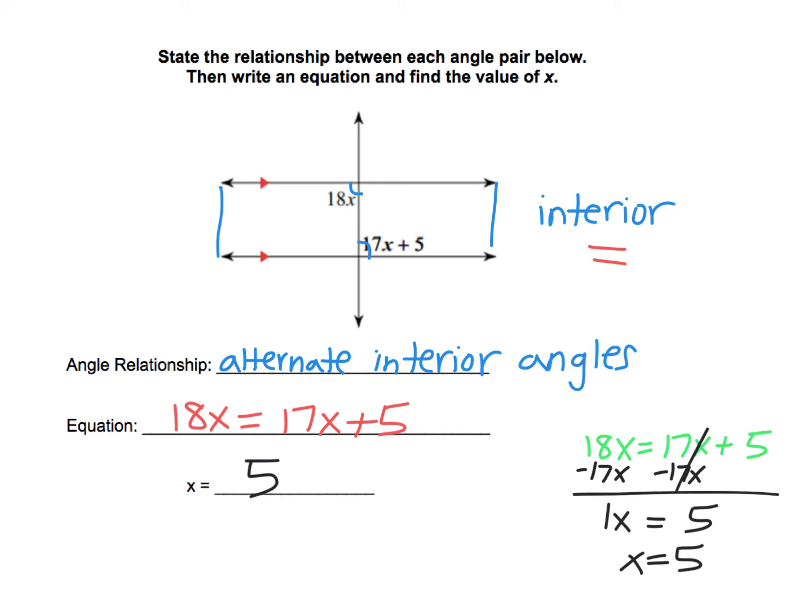You can verify that your answer is correct by plugging it back in. If x is equal to 5, if I check this first angle, 18x, that's 18 times 5. And 18 times 5 is 90. Now my other angle should also be 90.